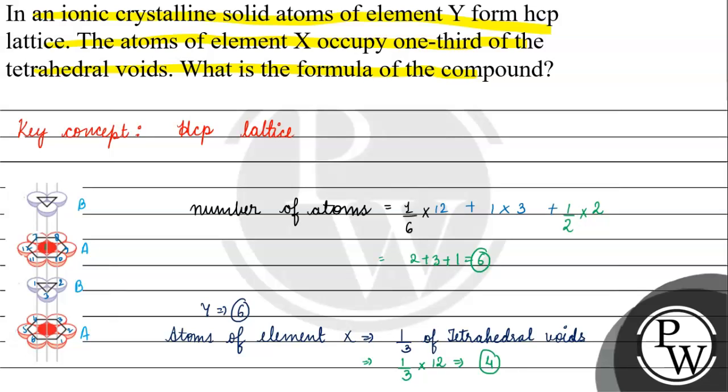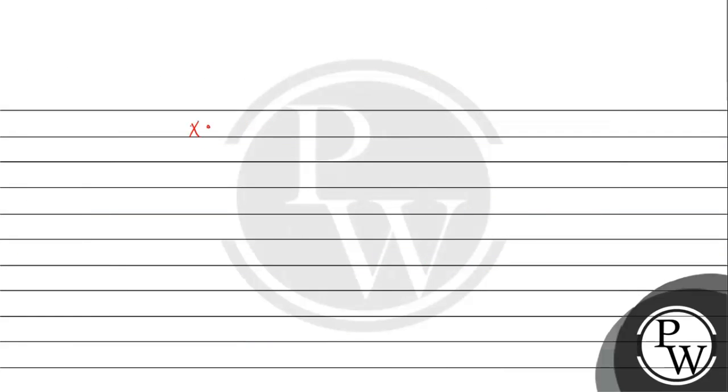Now, if we write this formula, we write X to Y ratio, which is 4 is to 6, or 2 is to 3. The formula of the compound will be X2Y3. Final answer to this question is X2Y3. I hope you understood it well. Thank you and all the best.